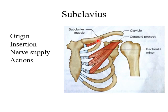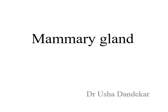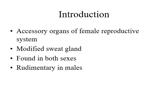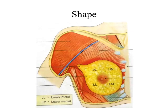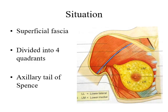So the pectoral region consists of three muscles: pectoralis major, deep to it is pectoralis minor, and the small subclavius muscle. The mammary gland is an accessory organ of the female reproductive system. It is a modified sweat gland, found in both sexes but well developed in females and rudimentary in males. It is hemispherical in shape and situated in the superficial fascia of the pectoral region.